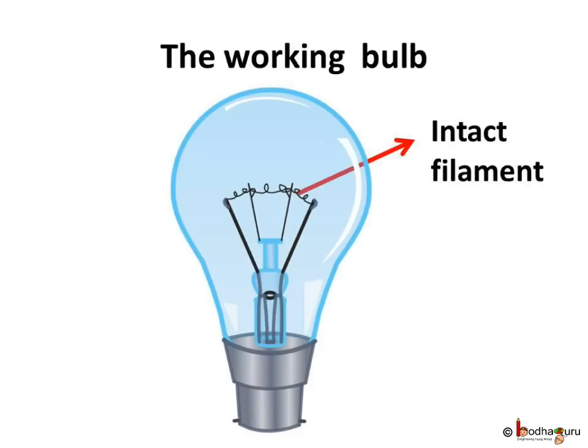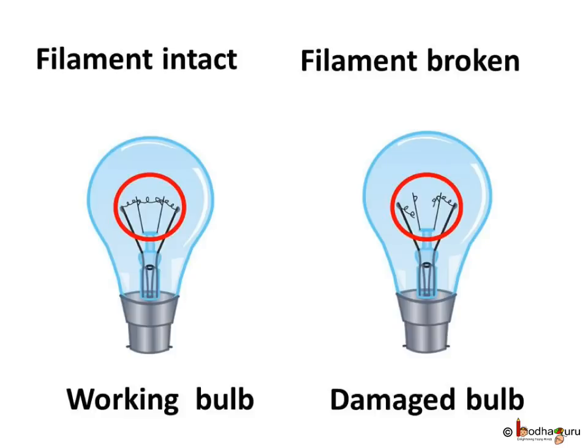Look, we found the problem. Let us place the two bulbs — the working one and the damaged one — near each other and see the difference clearly. We can see clearly: the working bulb has an intact filament while the damaged bulb has the broken filament.